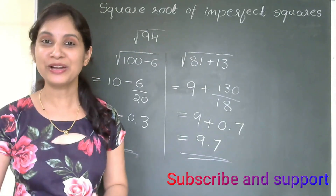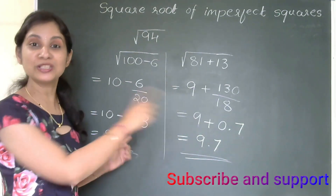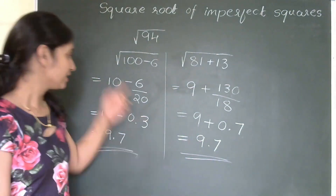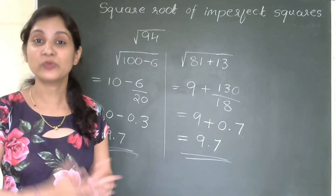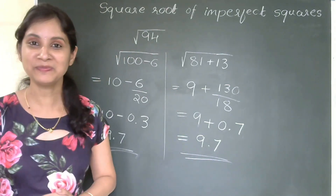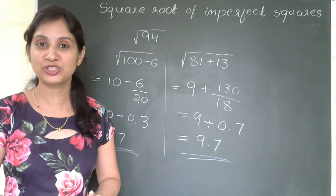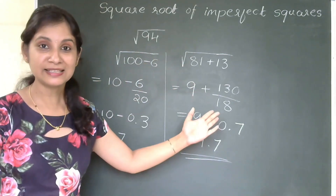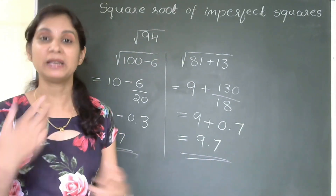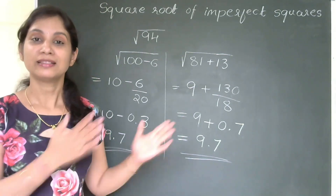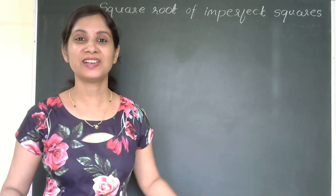The square root of the imperfect square 94 is 9.7, and we have solved it in just two steps. Are you interested to learn the trick involving Vedic mathematics to solve this type of problem? You are on the right video. Welcome to Tricks for Maths — this is Sharada Hegde. In our previous video we learned how to find the square root of any perfect square.